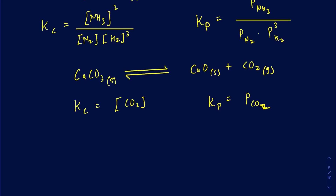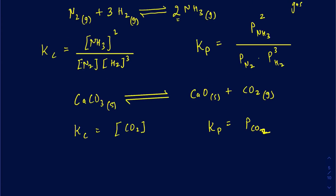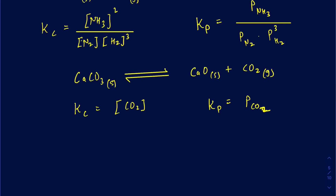The take-home message here: when writing Kc in a heterogeneous equilibrium, you include gases and aqueous phases — you don't include liquids and solids. But when writing Kp, it only involves gases. Kp does not even involve aqueous solutions, because aqueous solutions will not have significant pressure.